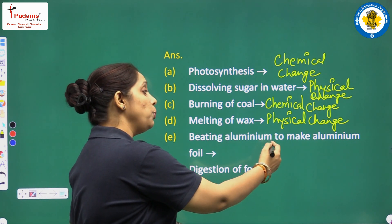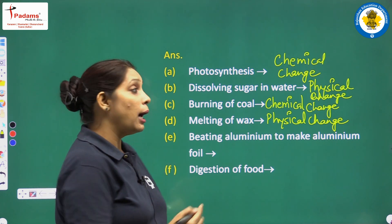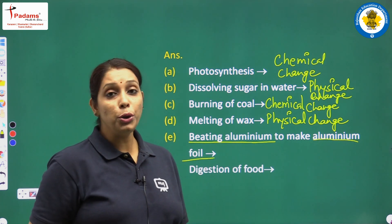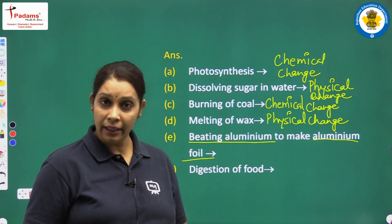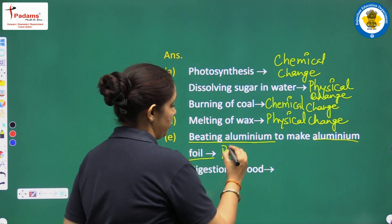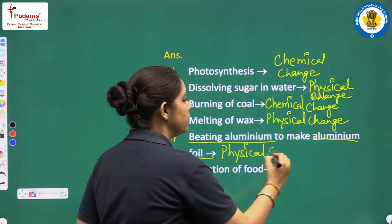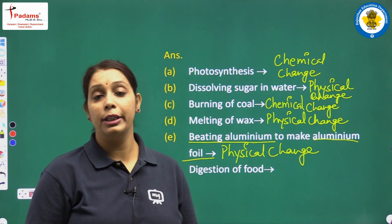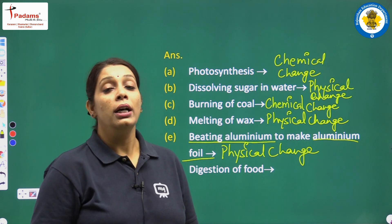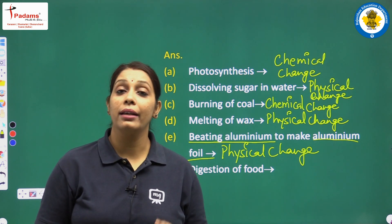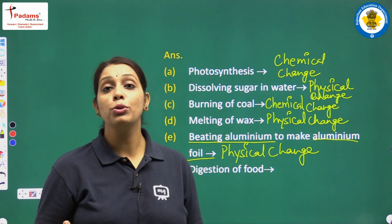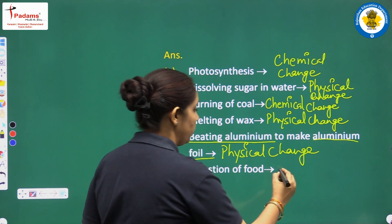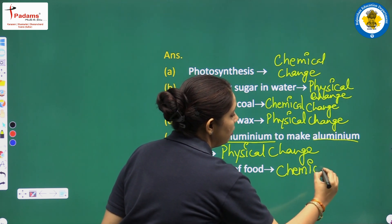Next one — beating aluminium to make aluminium foil. Beating aluminium makes aluminium foil, but no new product is formed and there is no change in chemical composition. So this type of change is a physical change. Next one — digestion of food. We already studied this in nutrition. Digestion of food is an example of chemical change. Note that it is different from chewing of food — chewing of food is a physical change, but digestion of food is a chemical change.